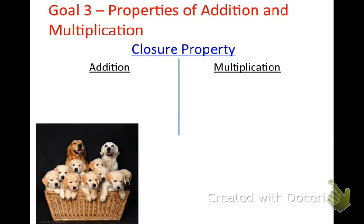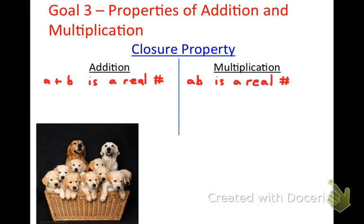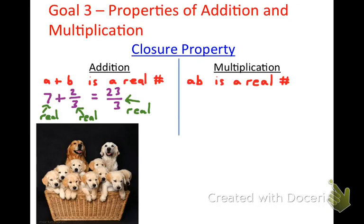Breeding dogs is a closed set — you breed two dogs, you get a dog. That's what it means when we talk about addition and multiplication having the closure property. Anytime you add two real numbers together you get a real number, and anytime you multiply two real numbers together you get a real number. For example, seven plus two-thirds gives you seven and two-thirds, or 23/3 — the result is still a real number.